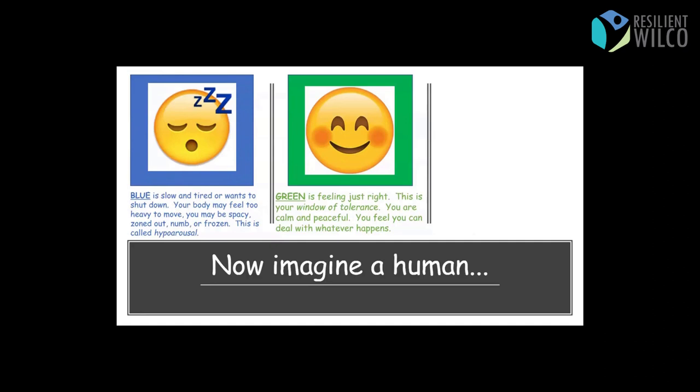If you're blue, you might be slow and tired or your body wants to shut down or your mind or emotions want to shut down. Your body may feel too heavy to move. You may be a little spacey, zoned out, numb or frozen. This is called hypo arousal. So if you imagine that broken down car or that tired crying car, that's kind of where your body is when you're in the blue.